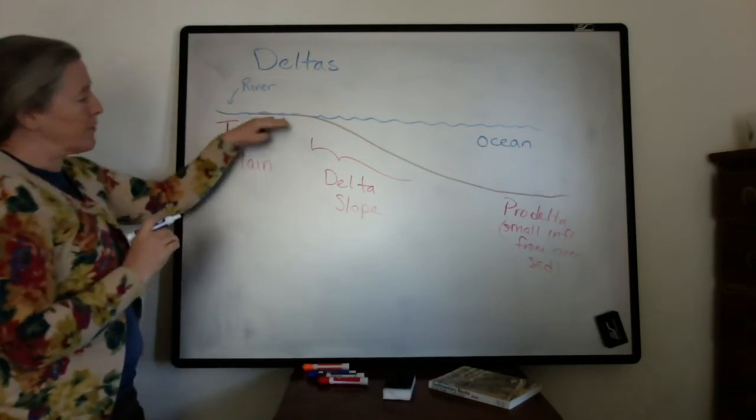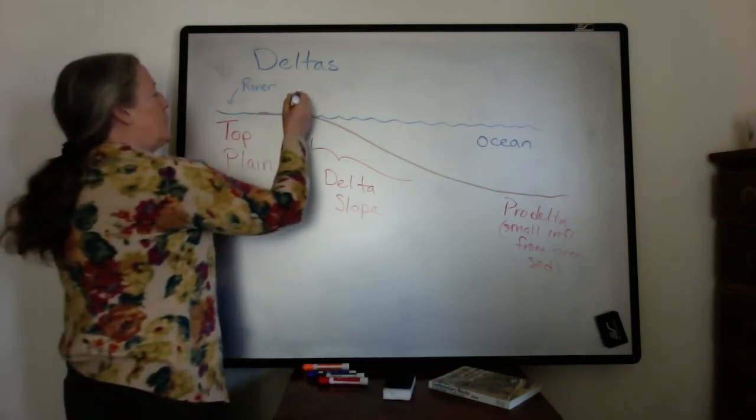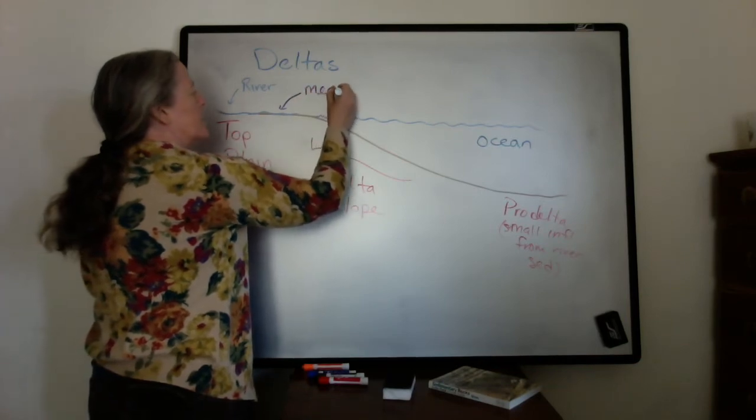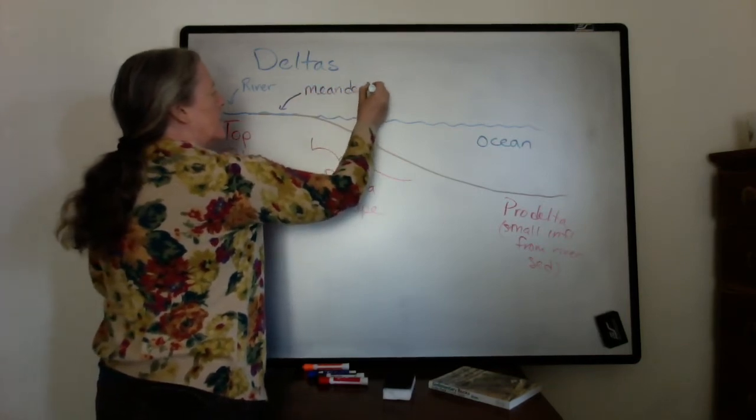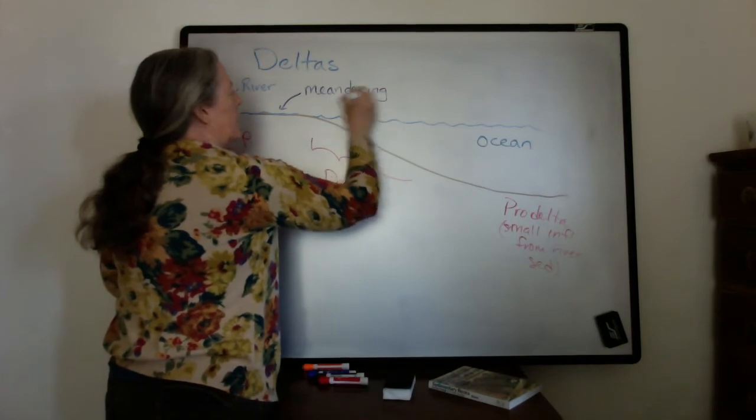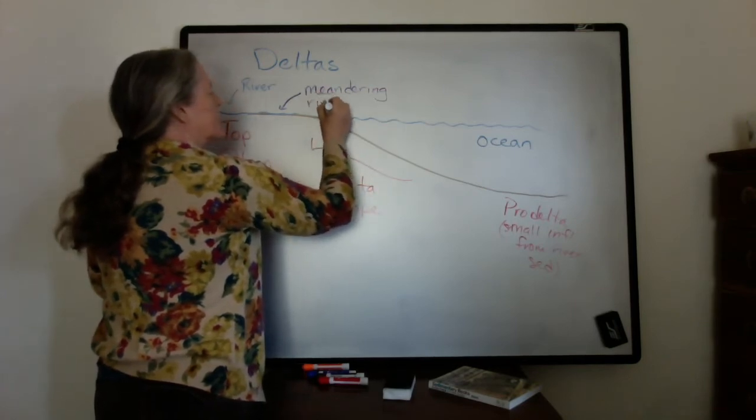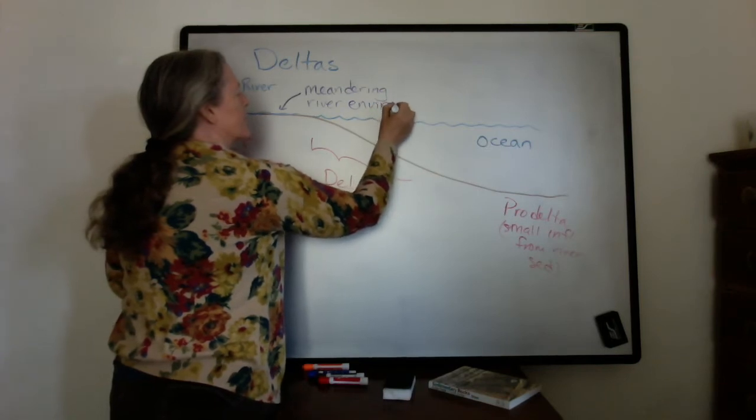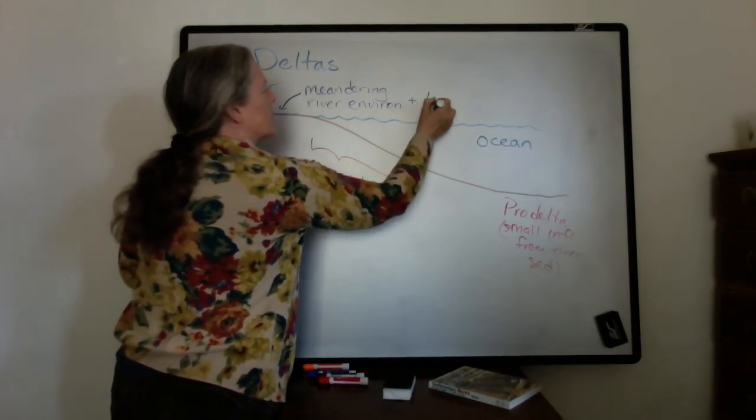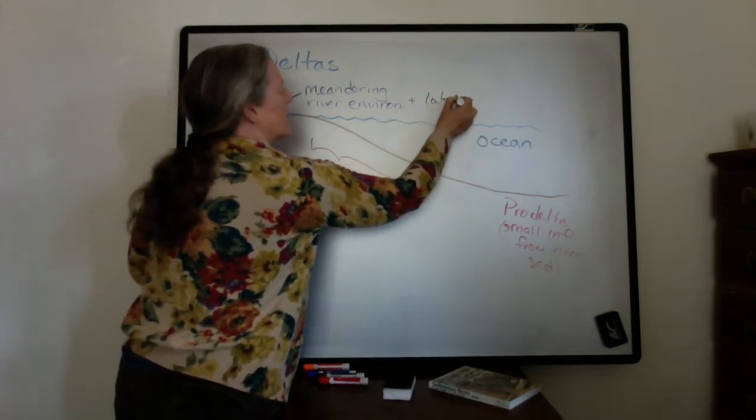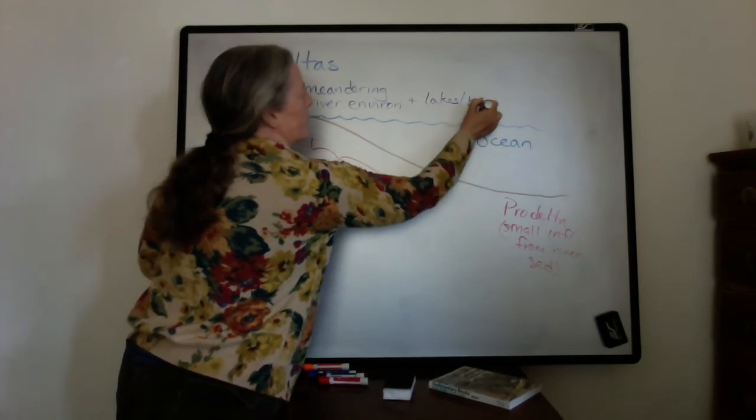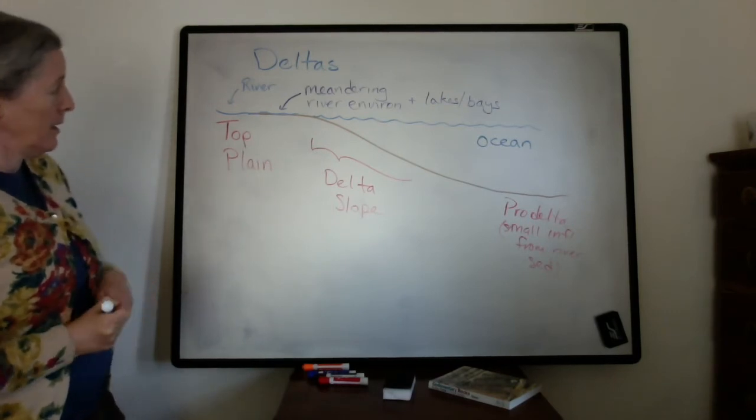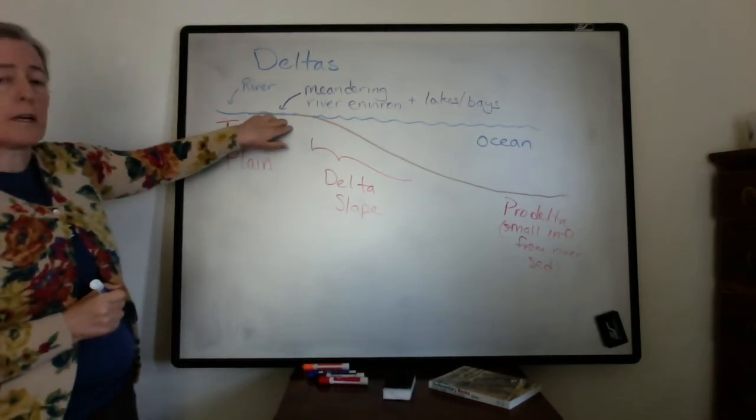That topography means that the rivers are usually meandering. So here we have meandering river facies or environments, plus lots of lakes if they're freshwater or bays if they're saltwater.